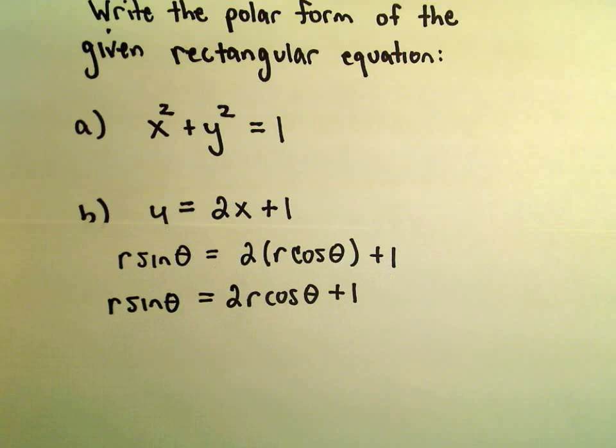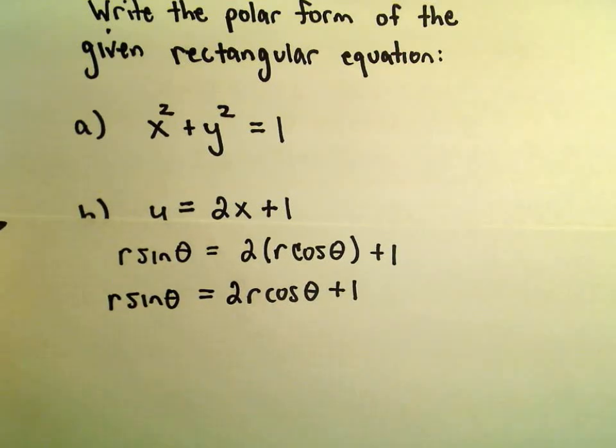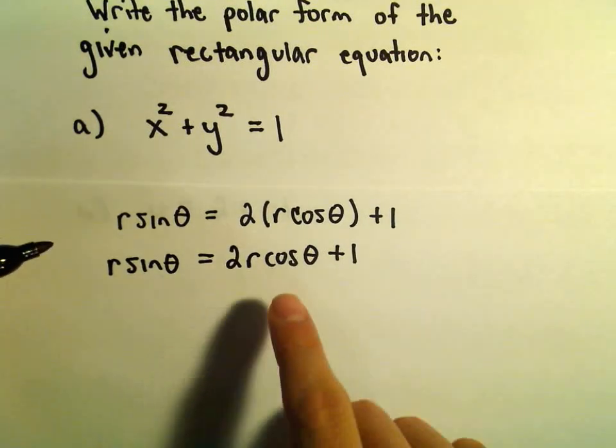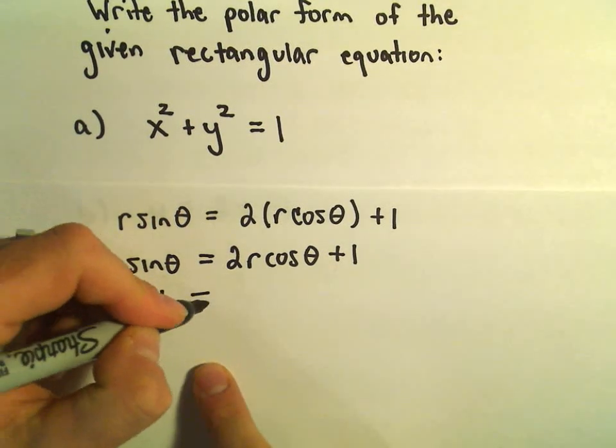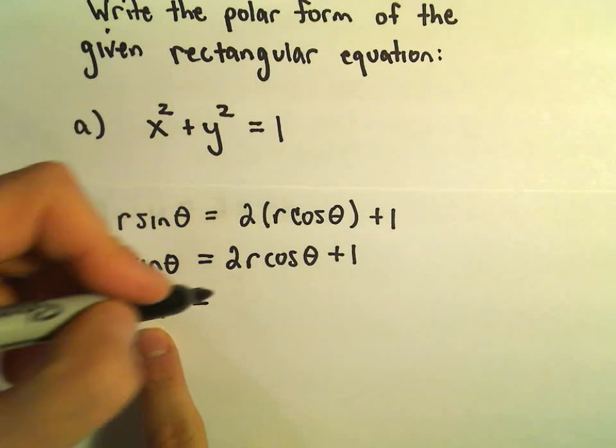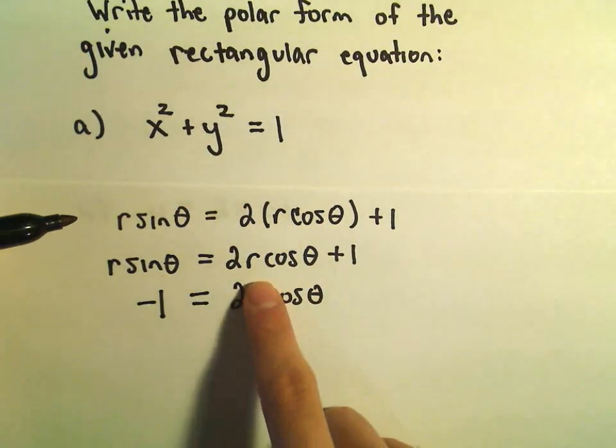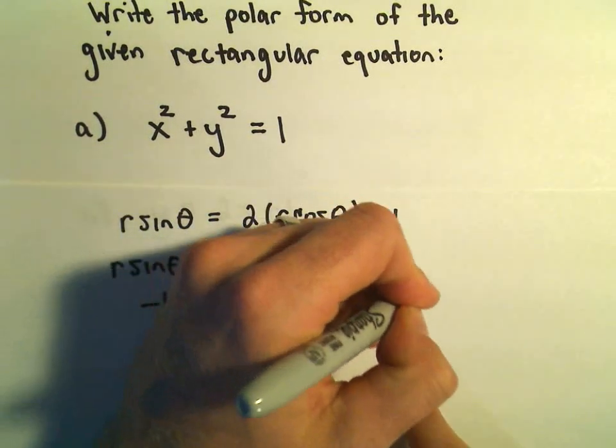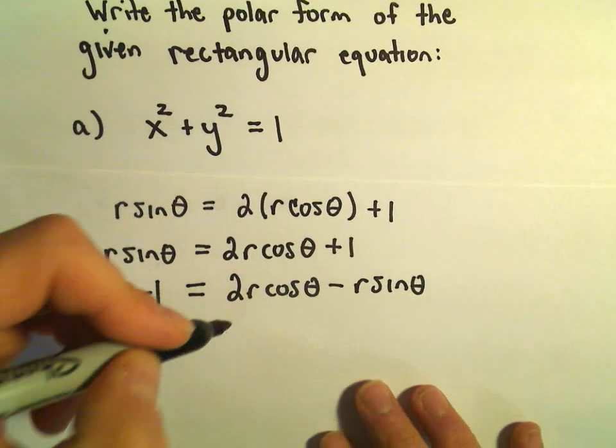And typically what people will do, if it's possible to solve for r, that's what usually you'll do. You'll have the r isolated and hopefully all the thetas on the other side. So let's see if we can't do that. I'm going to subtract the 1 over to the left side. So that would make the positive 1 to a negative 1. We'll leave the 2r cosine theta alone on the right. I'm going to subtract the r sine theta over.